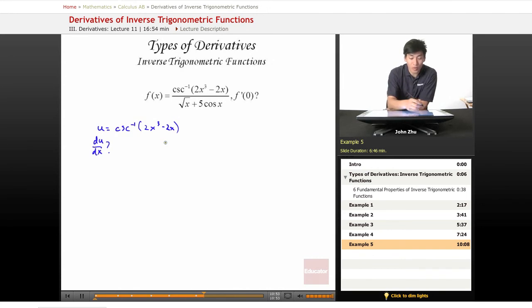So let's set another variable, we'll call this maybe z. So z equals 2x cubed minus 2x. So dz dx will become 6x squared minus 2.